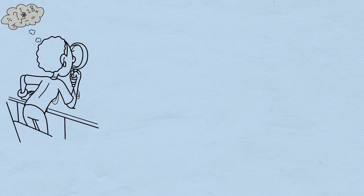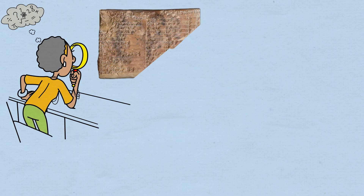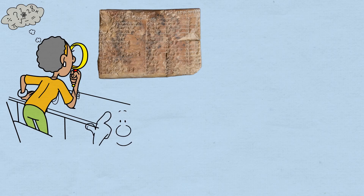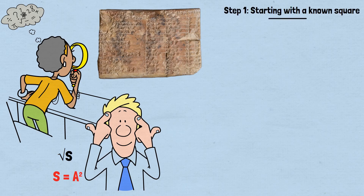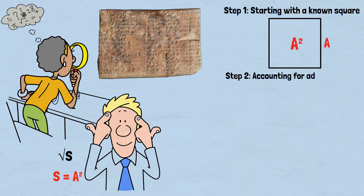The Babylonian algorithm's effectiveness can be understood through several mathematical lenses. Geometrically, when finding the square root of a number s, we can think of s as the area of a square whose side length we want to determine. Step 1: begin with a perfect square of area a², which has side length a. Step 2: the difference b = s − a² represents additional area that needs to be incorporated.